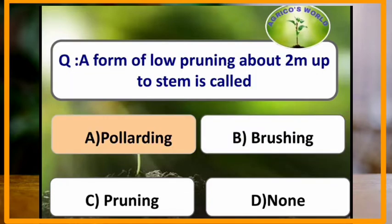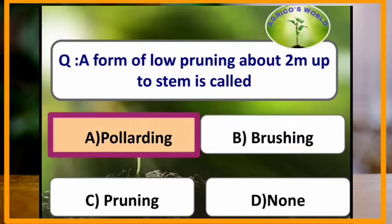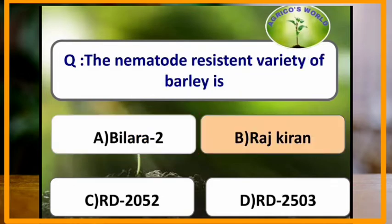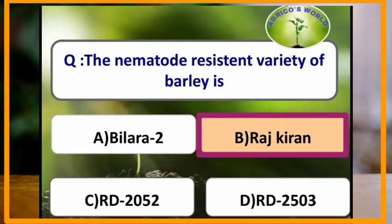A form of low pruning that is about two meters up the stem is called pollarding. The nematode resistant variety of barley is Rajkiran.